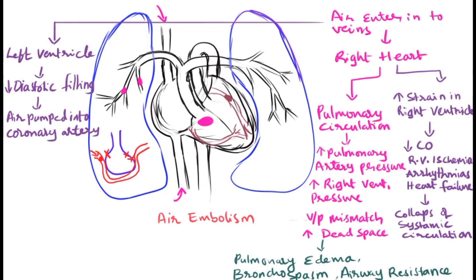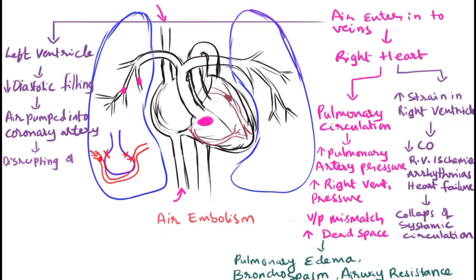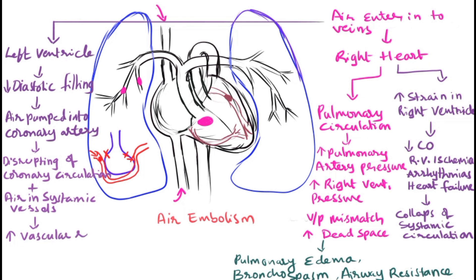The blockage of the coronary blood vessel disrupts coronary circulation, leading to myocardial infarction and arrhythmias. Blood passing through the aorta into small blood vessels may cause blockage, particularly in cerebral blood vessels, increasing vascular resistance due to trapped air. This results in hypoxia or hypoxemia, further leading to hypercapnia, and ultimately cardiovascular collapse and death.